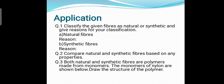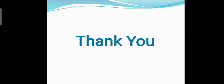Now we will discuss the volume book questions. First: classify the given fibers as natural or synthetic and give a reason for your classification. Second: compare natural and synthetic fibers based on their properties — for example, natural fibers have high water absorption capacity while synthetic fibers have less; natural fibers take more time to dry while synthetic fibers dry faster; natural fibers are comparatively weaker while synthetic fibers are stronger and last longer. Third: both natural and synthetic fibers are polymers made from monomers — the monomers of nylon are shown; draw the structure of the polymer. Solve these questions and upload your images on Google Classroom. Thank you so much, students — have a nice day!